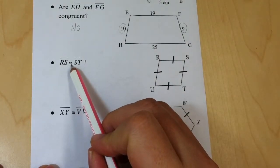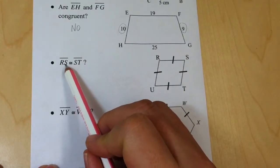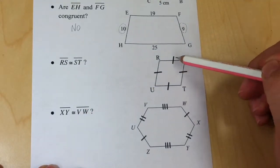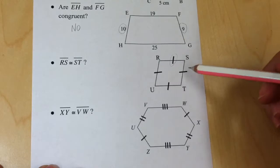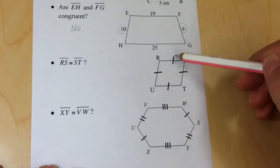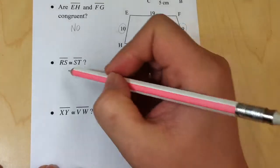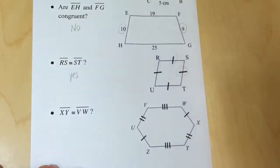So this symbol, remember, means congruent. RS congruent to ST. I check my figure. RS is this side here, ST is this side here, and they have the same number of lines. That indicates they are congruent, so yes, they are congruent.